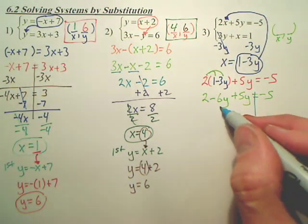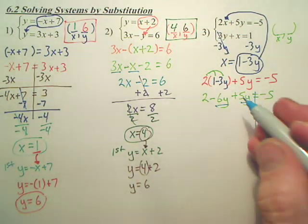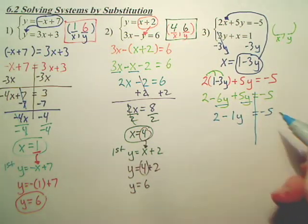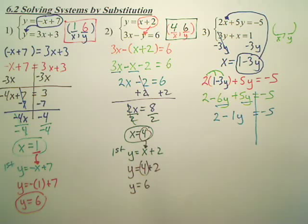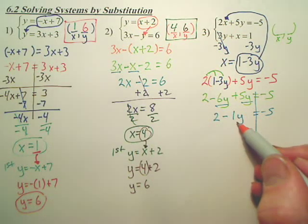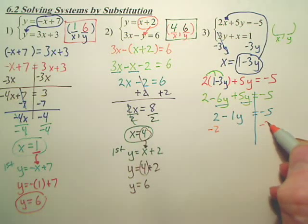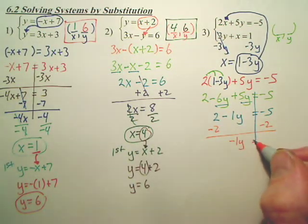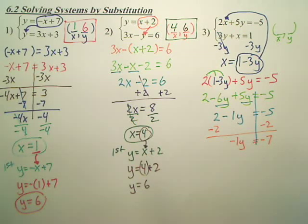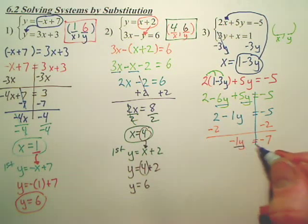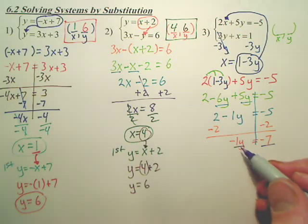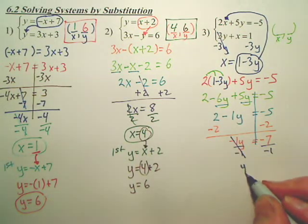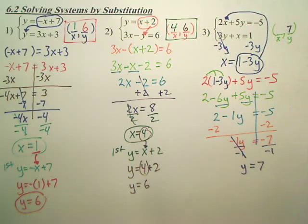Now, to solve this, can I combine these two? That gives me negative 1y. I want to get the y by itself, so I need to minus the 2 over. And then I've got to divide by what? To get the y by itself, I have to divide by negative 1. y is 7.